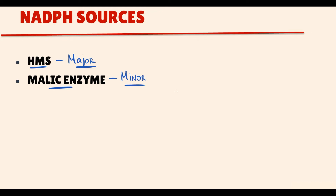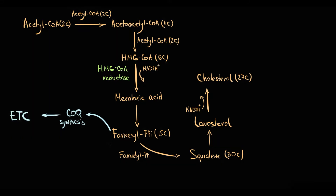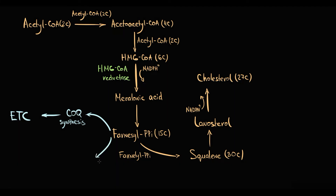A very high-yield concept is that farnesyl pyrophosphate participates in synthesis of coenzyme Q, which is an essential element of the electron transport chain in mitochondria. Also, farnesyl pyrophosphate is used for synthesis of dolichol pyrophosphate, which is used for N-linked glycosylation of proteins.